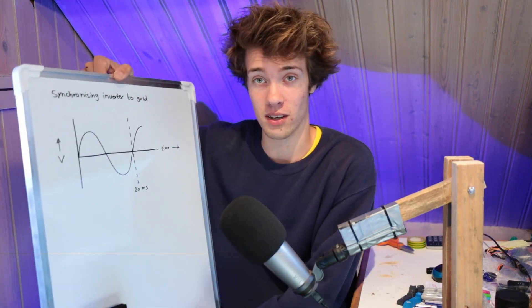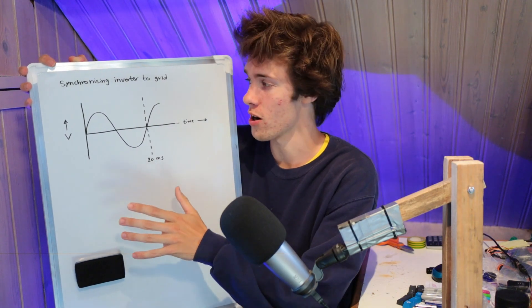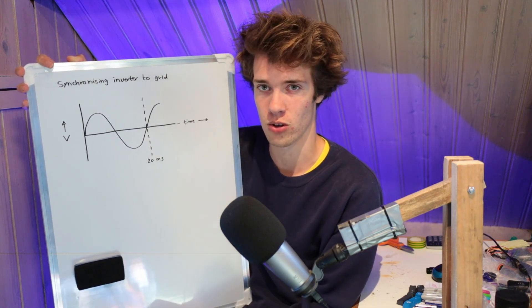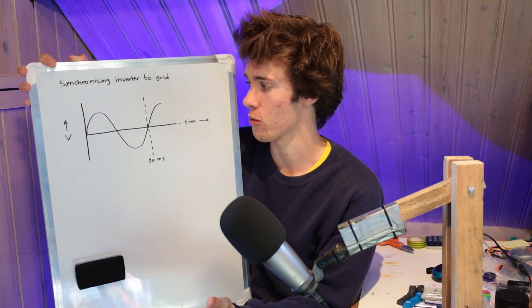So first of all, let's talk a little bit about the challenge that we're actually facing here. What makes a grid-synchronized inverter special? How is it different from an ordinary inverter that we've already built? In order to understand that, I've drawn something on this whiteboard. What we have here is a graph with voltage on the vertical axis and time on the horizontal axis, and this line represents the voltage on the power grid.